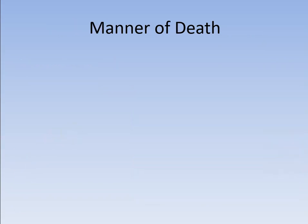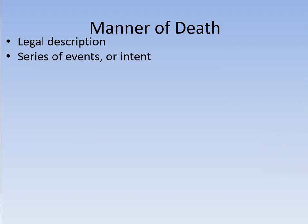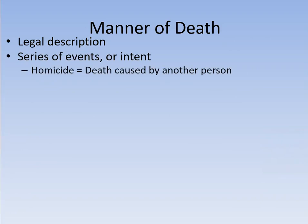Let's start with the manner of death. The manner of death is a legal description — this is something we use in court — and it refers to what happened or what was the point of the situation which caused this person's death. We can label a death a homicide: a death caused by another person. Manslaughter or negligent homicide all have one thing in common — the death was caused by another person. Compare that to suicide, where the death is caused by the person intentionally trying to kill themselves — there's your intent.